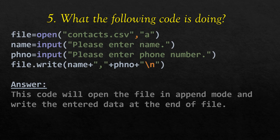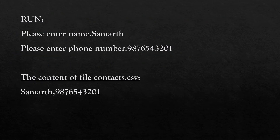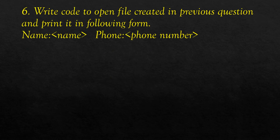The next question asks what the following code is doing. The file contacts.csv is opened in append mode. One variable name stores the entered name, and another variable phone_number stores the entered phone number. These two values are written into the file using the file.write method. When we run the program, it asks for a name — say 'Samarth' — and a phone number, then writes both values into contacts.csv.